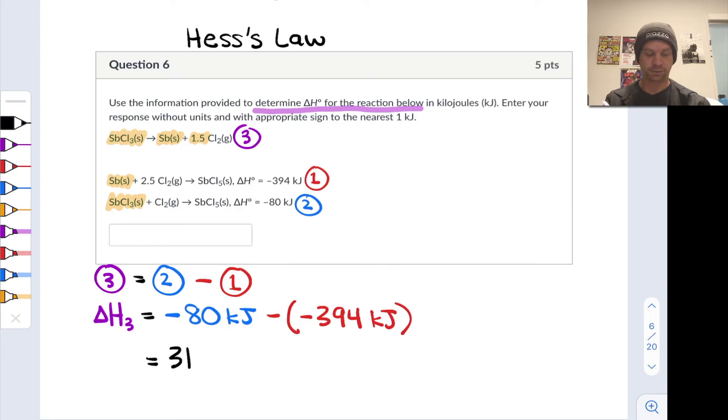That's going to flip positive and give us a final result of 394 kilojoules minus 80 kilojoules, which is positive 314 kilojoules for reaction three. So application of Hess's law, where we needed to flip reaction one in order to make this work. But after flipping reaction one and adding the two enthalpies, we arrive at the enthalpy of reaction three.